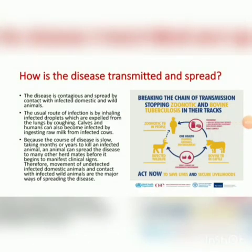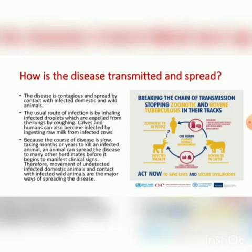The disease is contagious, spread by contact with infected domestic and wild animals. The usual route of infection is by inhaling infected droplets which are expelled from the lungs by coughing. Calves and humans can also become infected by ingesting organisms from infected milk. That is why it is always advised to drink heat-treated milk.